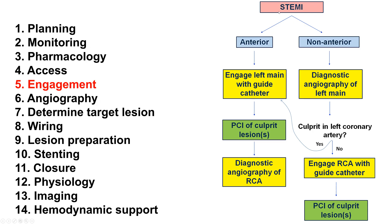In cases like this, primary PCI is the preferred strategy. The question is do you go straight to the culprit lesion with the guide, or first inject the potentially non-culprit vessel? If it's an anterior MI, we would typically go in straight with the guide catheter, do PCI of the culprit lesion, and then do a diagnostic angiogram of the right coronary artery, the rationale being that findings on the right are unlikely to affect what we do on the left.